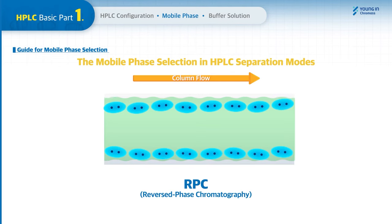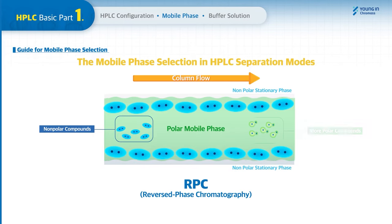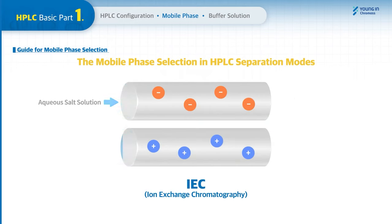In reverse phase chromatography, the separation of analytes is based on nonpolar interaction. Generally, the mobile phase is more polar than the stationary phase, and the more polar compound elutes first from the HPLC column.